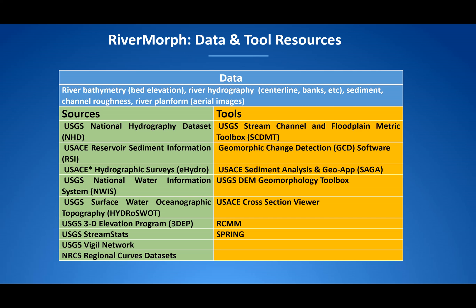This table shows the datasets we plan to have in RiverMorph, some of the resources from where the data will come from, and the tools that RiverMorph may host or support. This is a preliminary list, and we plan to host workshops with stakeholders and partners to finalize these tables. Many of our partners include federal agencies including the USGS and the US Army Corps of Engineers. We also plan to host some in-house tools such as the river channel morphology model RCMM and its counterpart Spring, which creates synthetic bathymetry from limited field data.